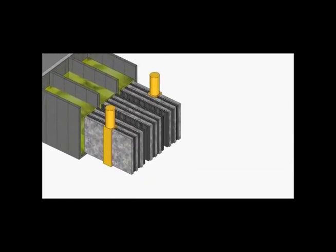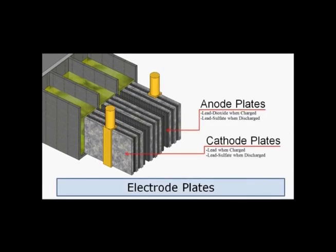The electrode plates, shown here, consist of the anode and the cathode plates. The difference in their molecular makeup is what creates a charge.